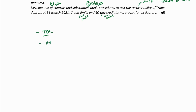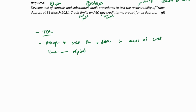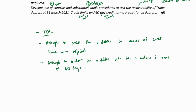To test the limit control using CATS and test data, I'm going to attempt to order for a debtor in excess of the credit limit, and it should be rejected. For the term control, I attempt to order for a debtor who has a balance in excess of 60 days, and the order should be rejected. You shouldn't be able to place an order if you are sitting with a balance in excess of those days.